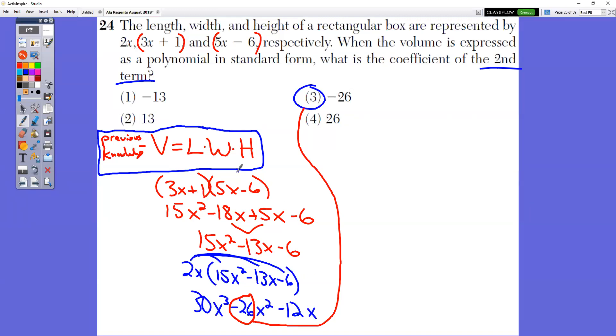So we need to multiply these three things together. I chose to multiply the two binomials together first, and I got 15x² - 13x - 6. And then I chose to multiply by the 2x. So 2x times that answer, distribute, distribute, distribute, you get this trinomial. They want to know what's the coefficient of the second term. So that second term is negative 26, which is choice three.